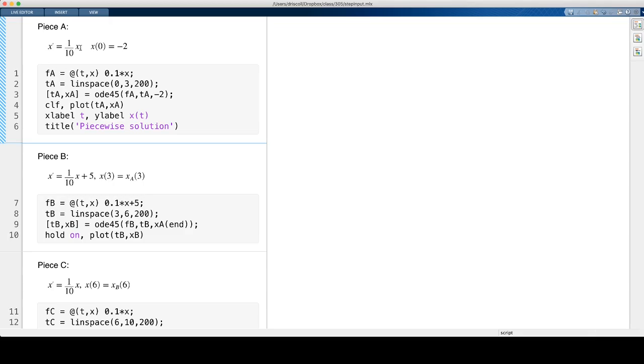So the first piece of the solution goes from time 0 to time 3. I have to define the differential equation for the numerical solution. So I define a differential equation by creating a function that says what dx dt must be. So dx dt, as a function of t and x, is 0.1 times x. I'm going to solve this at 200 points in the interval from time 0 to time 3. And then in my solver, I have to give it the f, the time, and the initial value. So I'll do that and plot the solution.